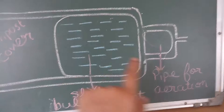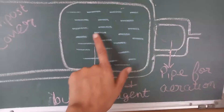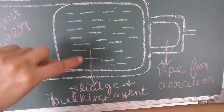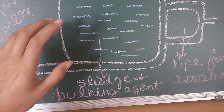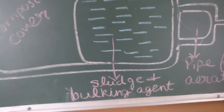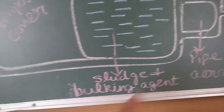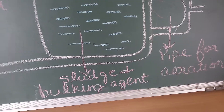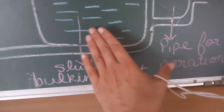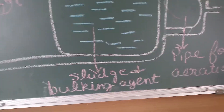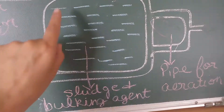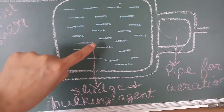This entire system is placed on a mesh or grid, with pipes running beneath it. The sludge and bulking agent — the bulking agent means wood chips — are placed over this grid of aeration pipes. Air is supplied through the blower for efficient aeration.